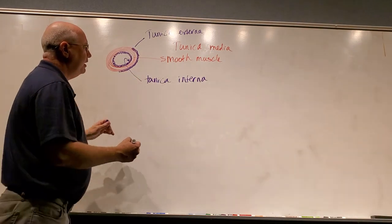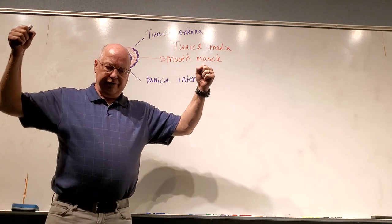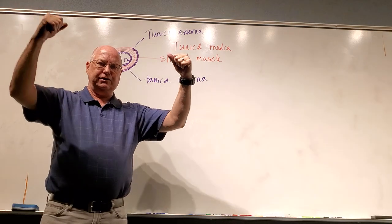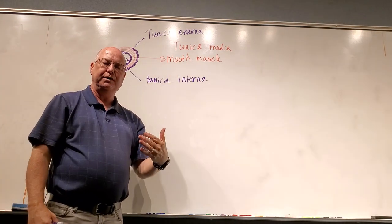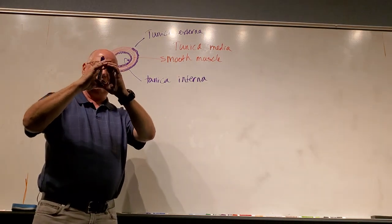And these two layers are a lot of elastic connective tissue. What that allows is when the left ventricle does contract, the artery will expand and then snap back. That snapping back is referred to as elastic rebound. The elastic rebound is when the artery starts to stretch and snap back.